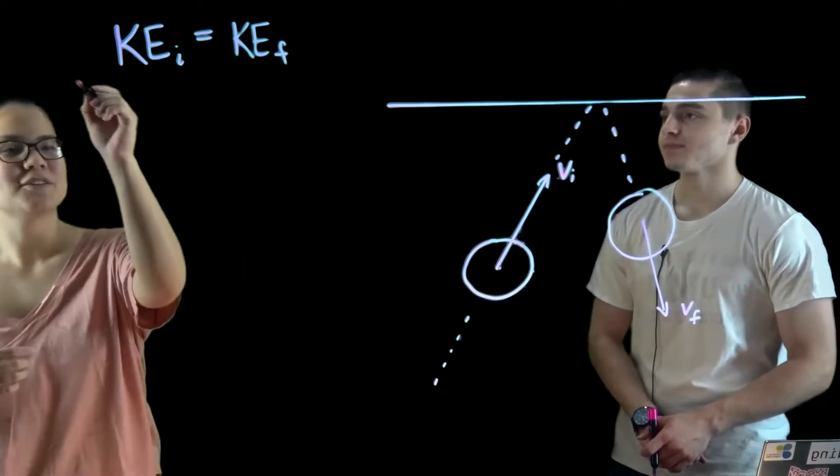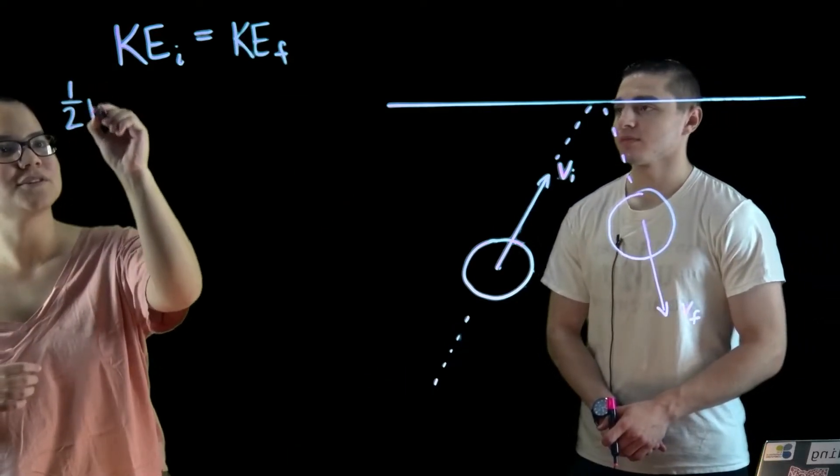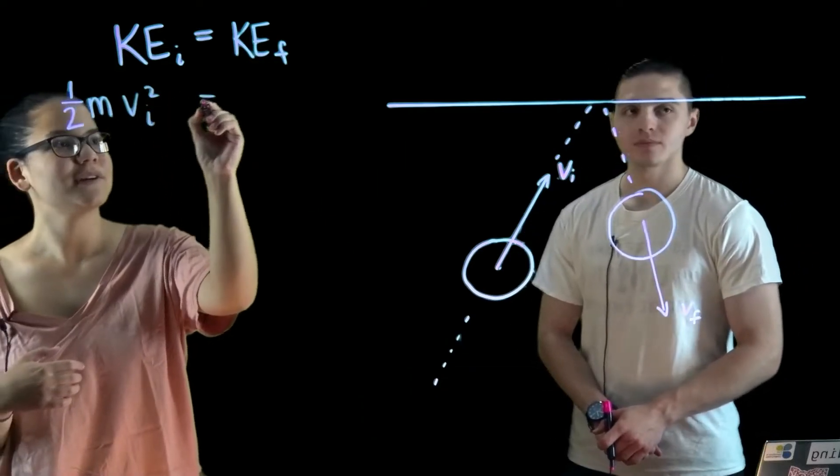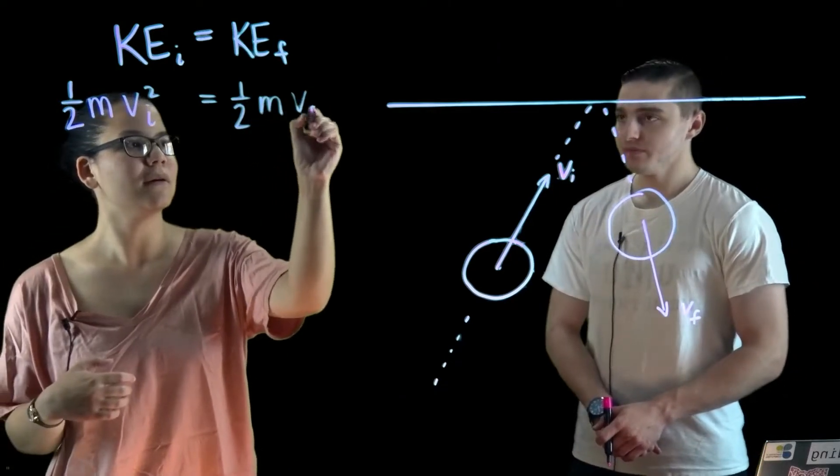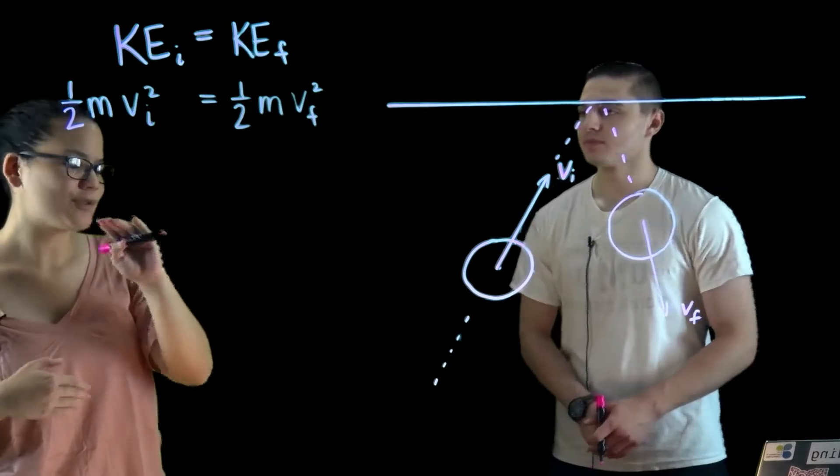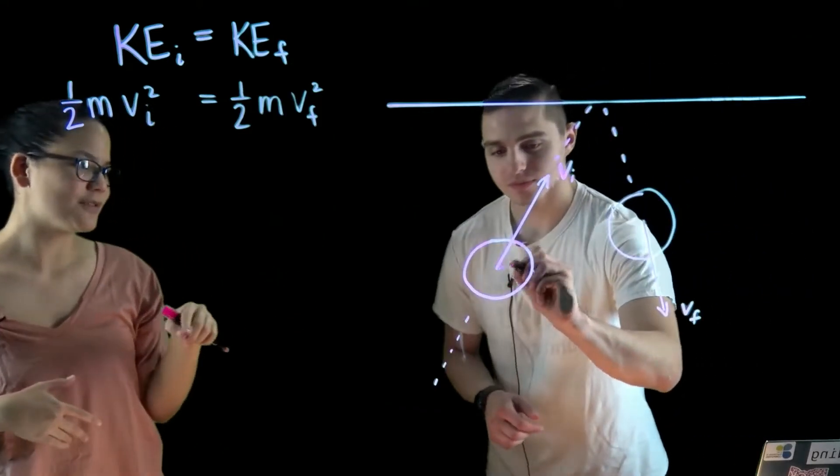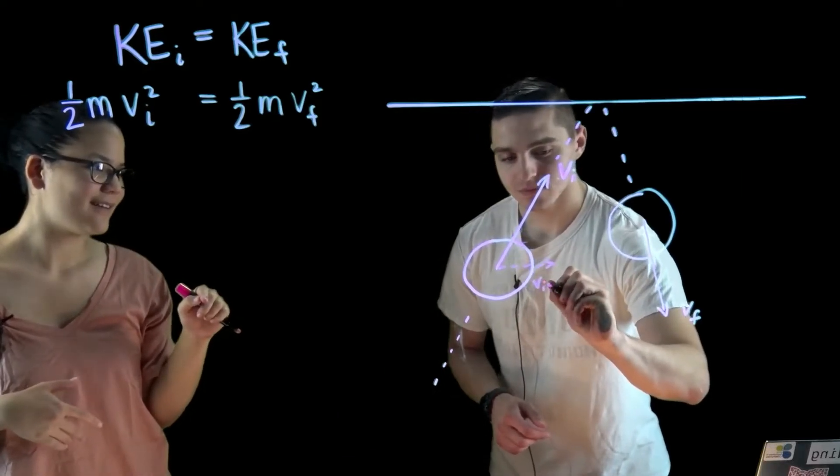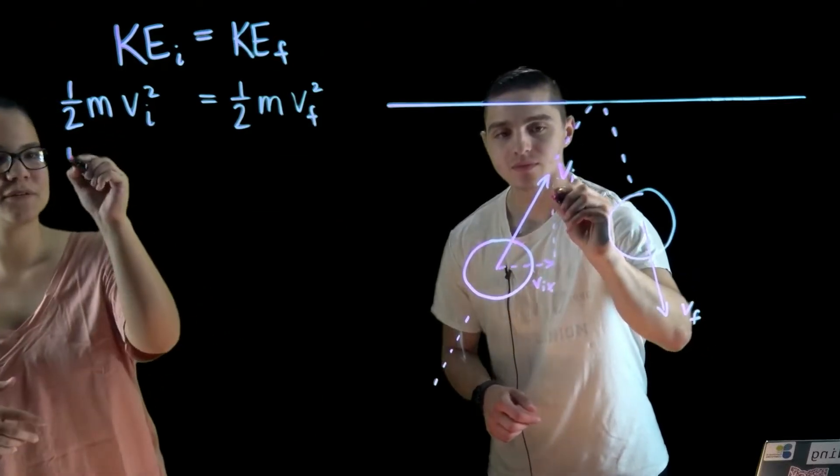So we can expand that further and if you recall, kinetic energy is one-half m v squared. And since we're playing a 2D game, this velocity vector has both an x component, which Joe is drawing out, and a y component. So I'll break that out over here.